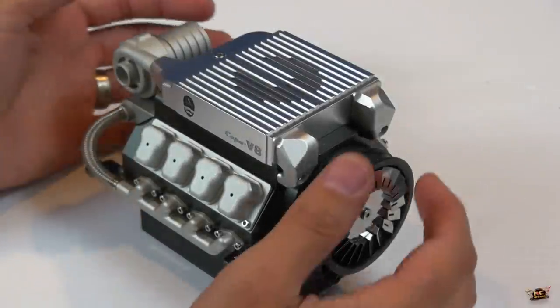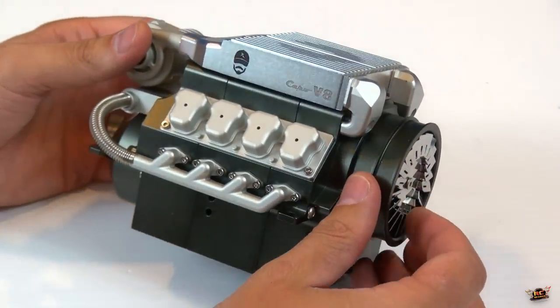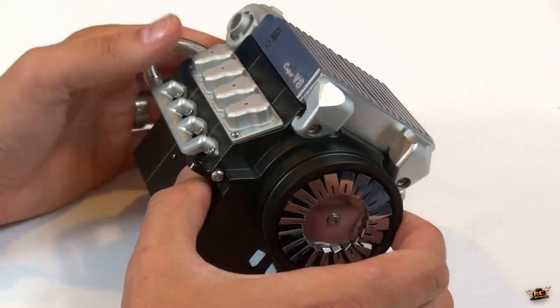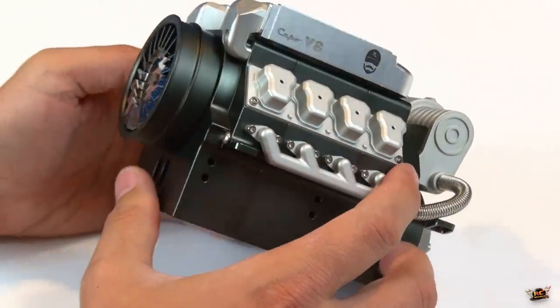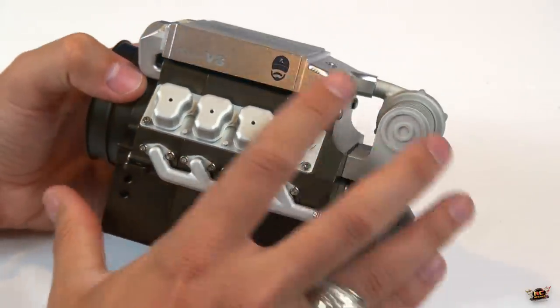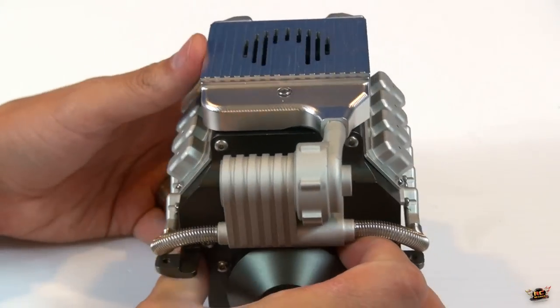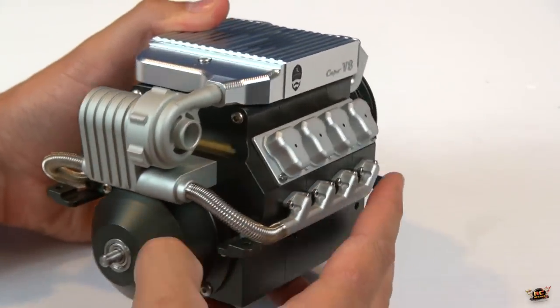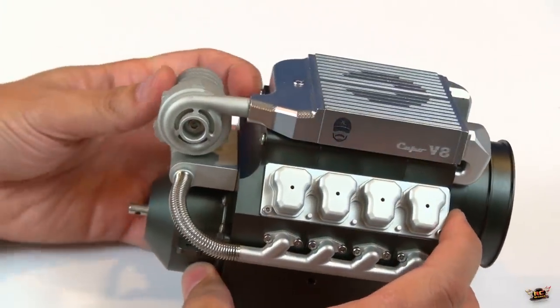Alright, so we finally get to have a look at this little masterpiece. This is the scale engine that they built for the 10th scale Capo 8x8. This is not a gas-powered engine, this is only for looks, but what you're looking at is a scaled-down version of a V8 turbo diesel.